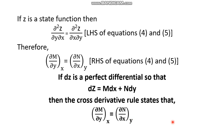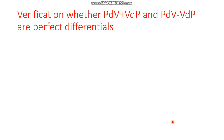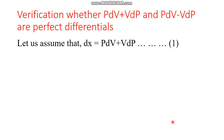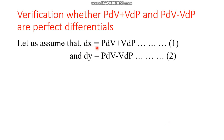Let us elaborate this with some more examples: verification of the terms pdV + Vdp and pdV − Vdp. p and V are both variables. Let us define dx equals pdV plus Vdp as equation 1, and dy equals pdV minus Vdp as equation number 2, and check whether these are perfect differentials.